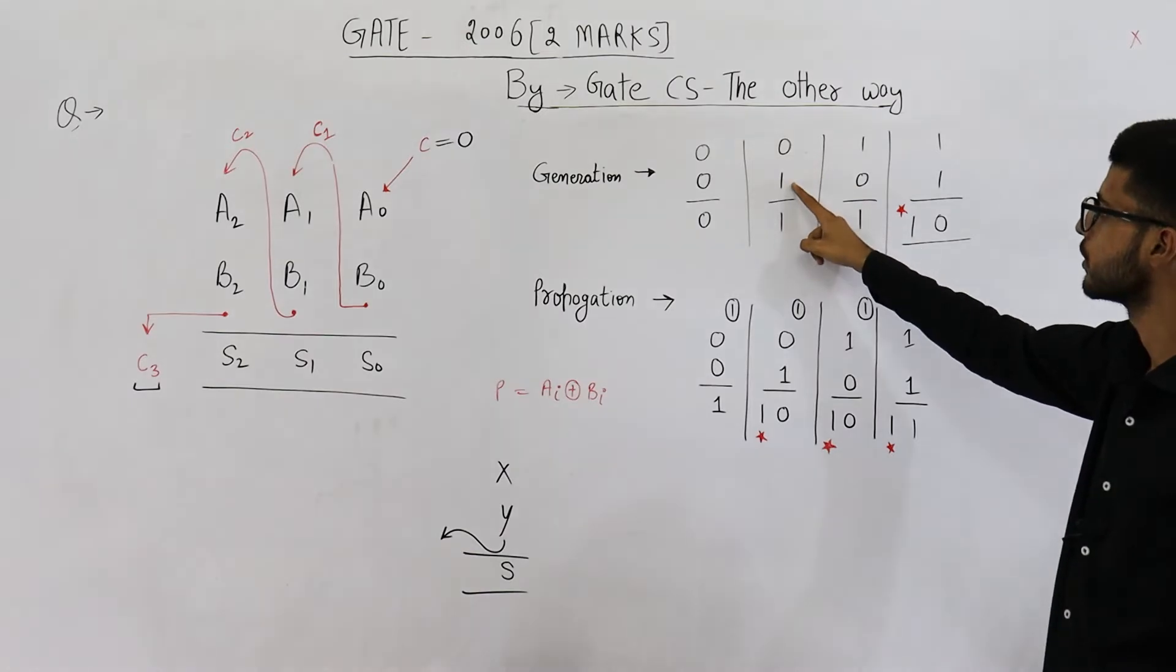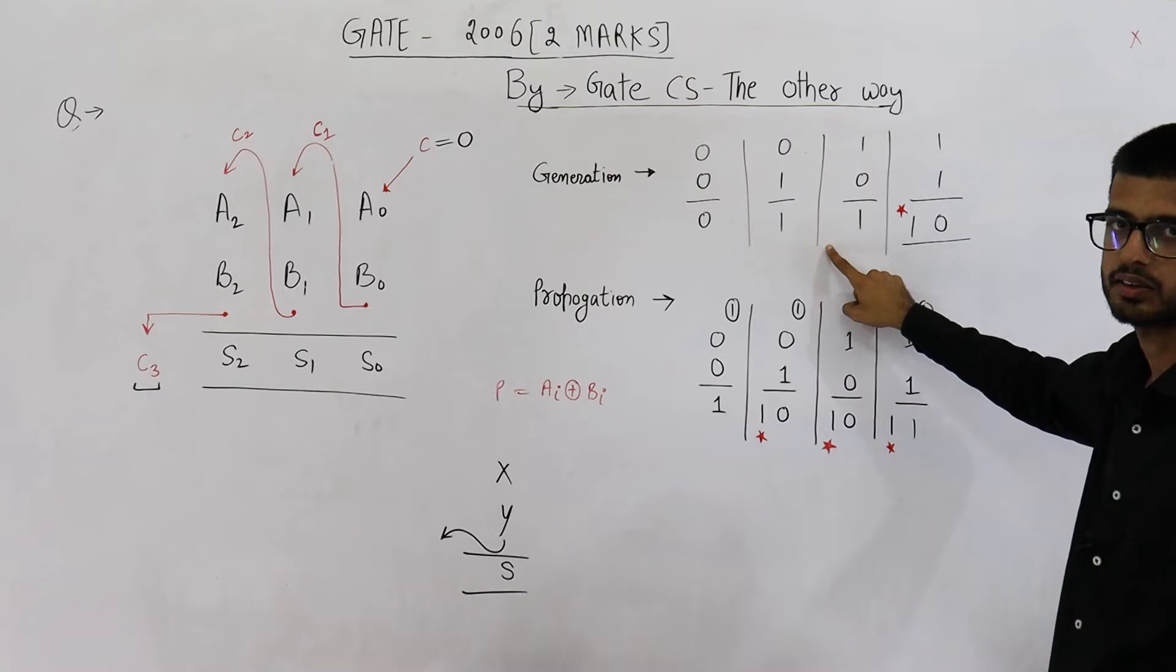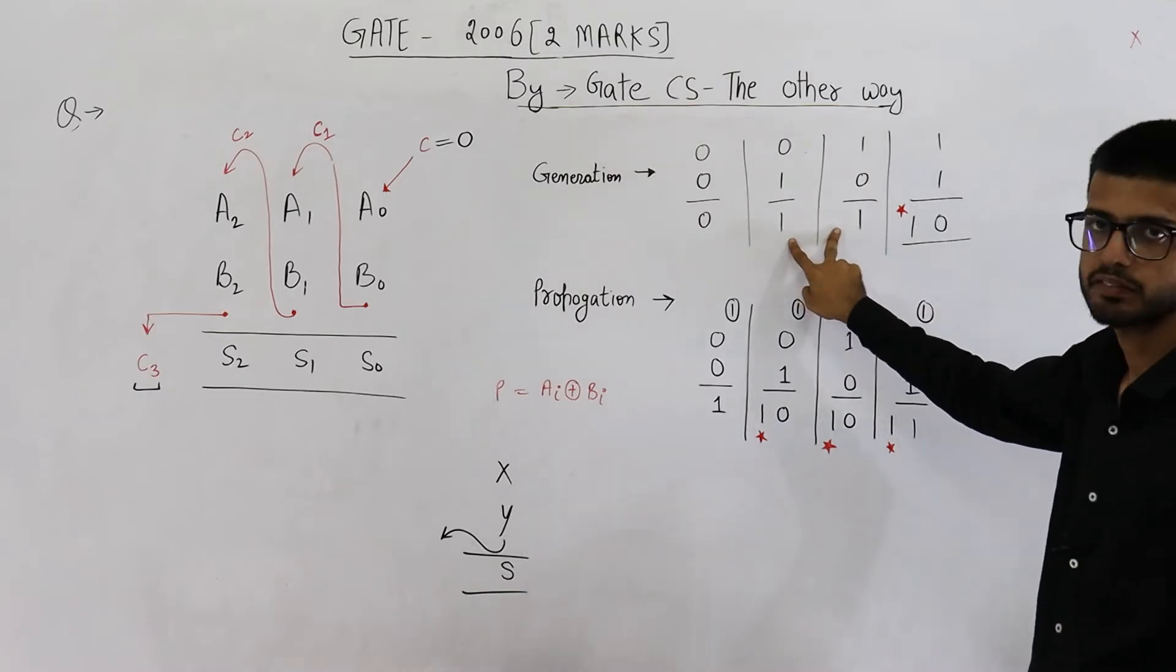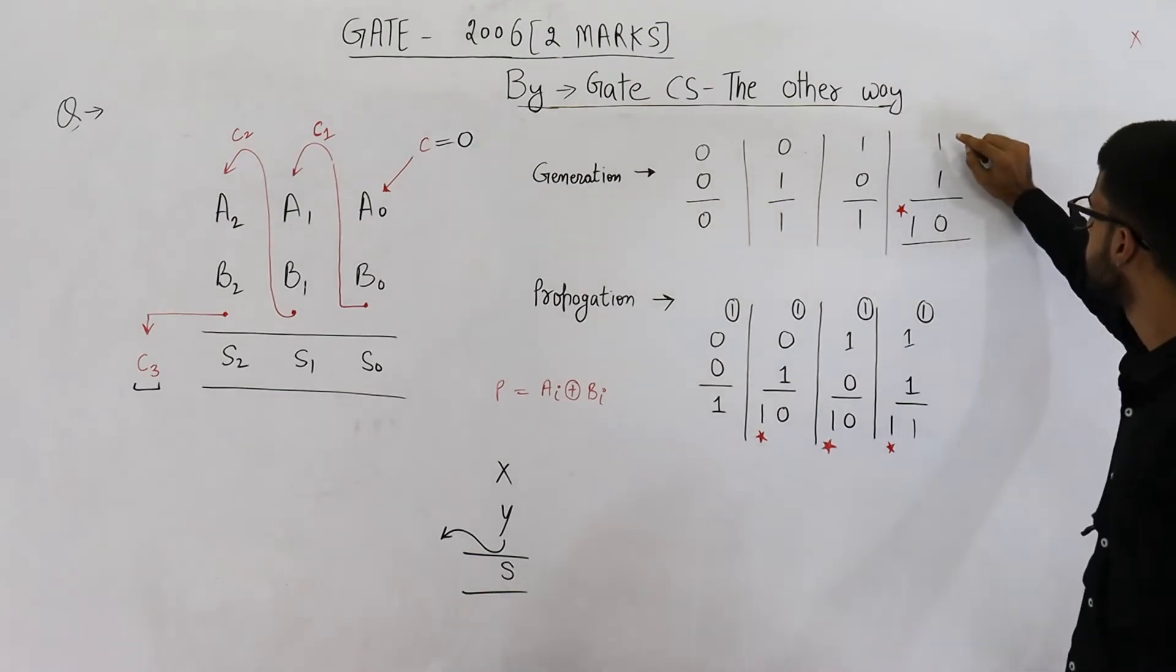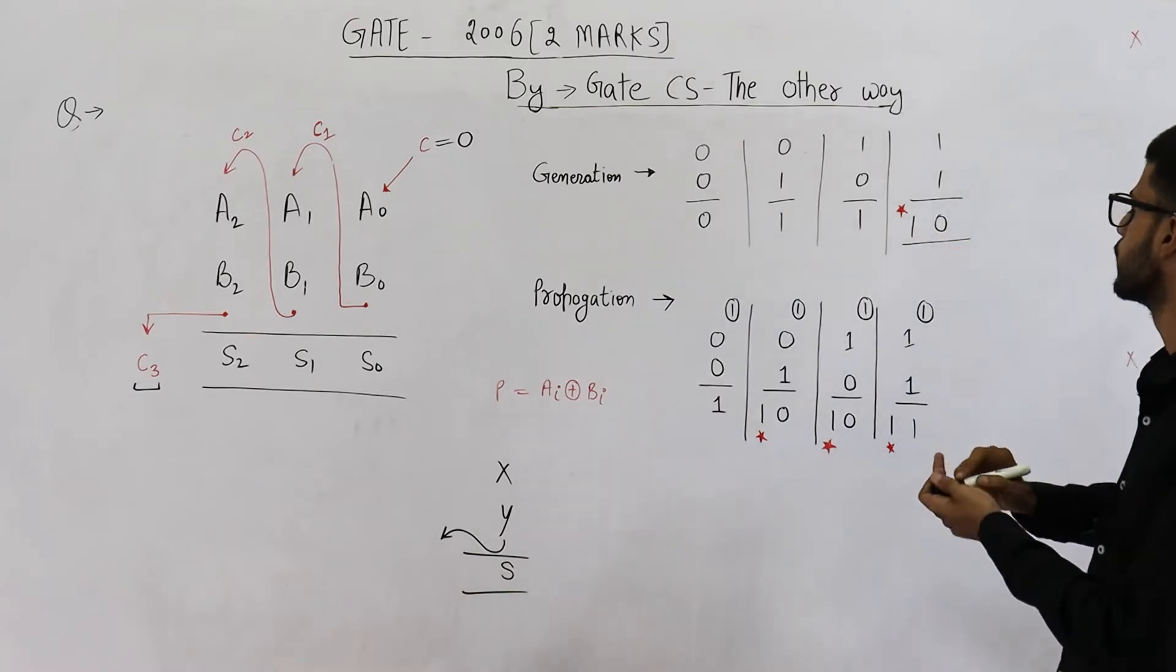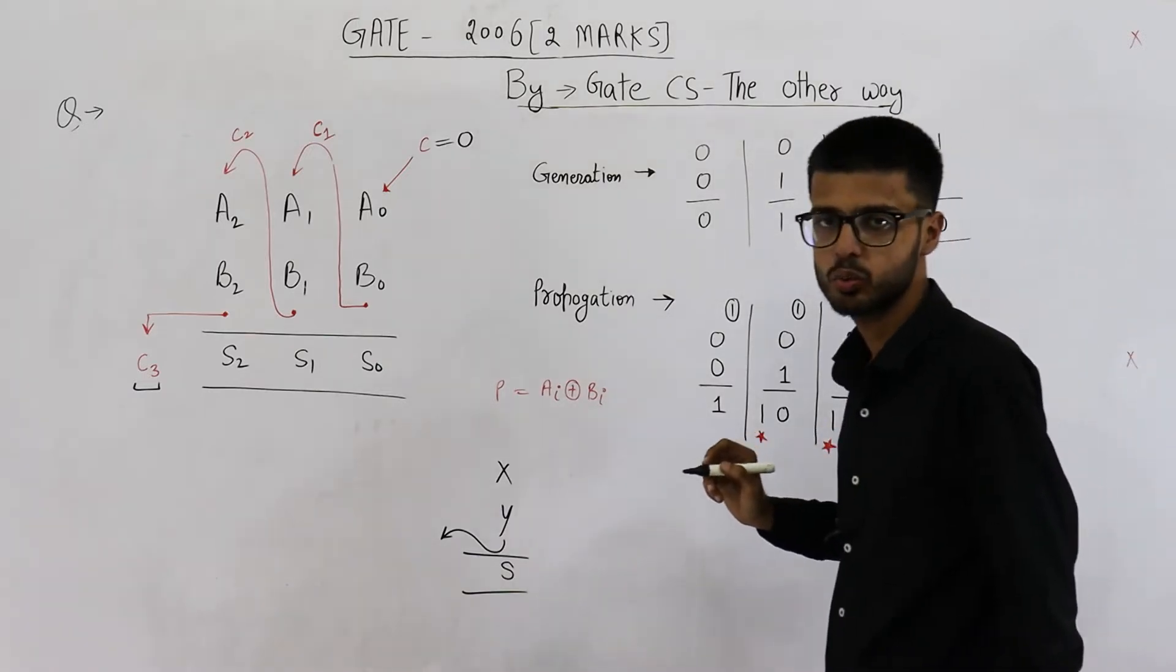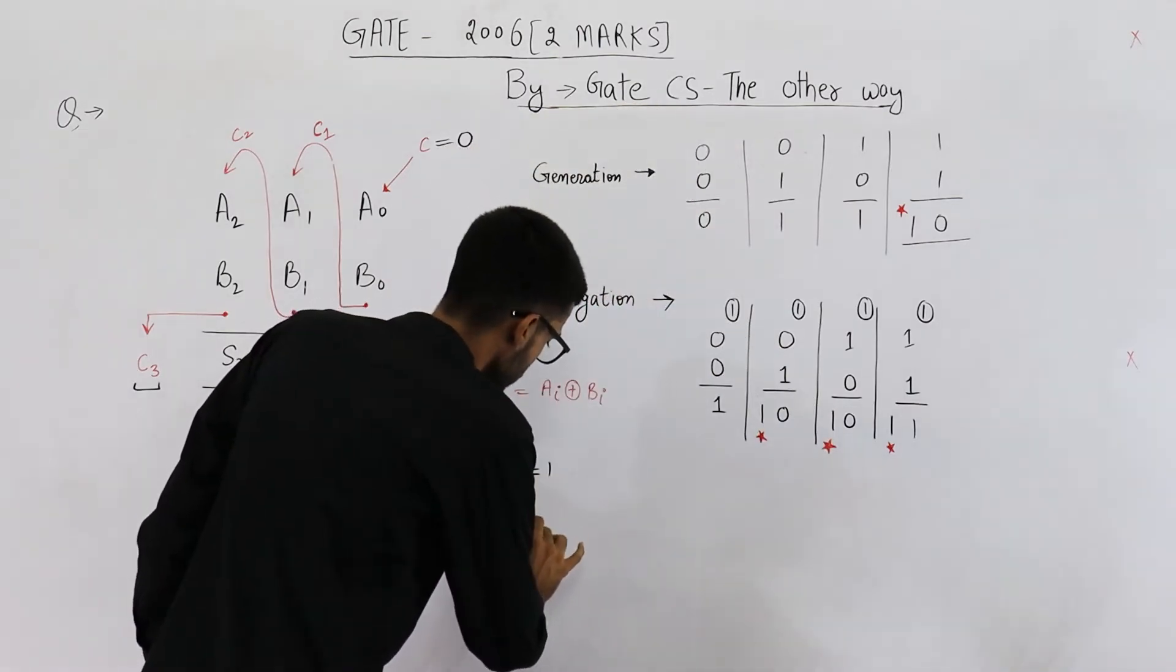If they are 0, 1, still no carry is generated. If they are 1, 0, still no carry is generated. Sum is 1 in both of these cases but they don't generate any carry. But when both of these numbers are 1, 1, you can see the sum is 0 and carry is 1. So for carry to be generated, the condition is both the bits must be 1.